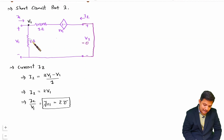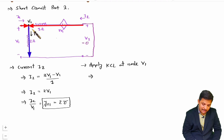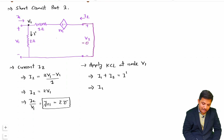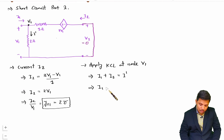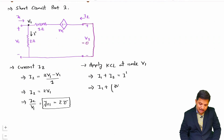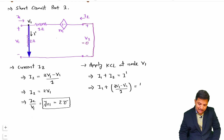Now I want the relation between i1 and v1, which gives y11. Let me label the current in the 2-ohm branch as i-dash and apply KCL at node v1. Entering currents equal leaving currents: i1 + i2 = i-dash. Here i2 = (3v1 − v1)/1, and i-dash = v1/2.